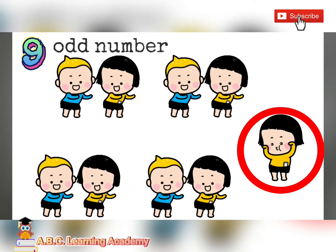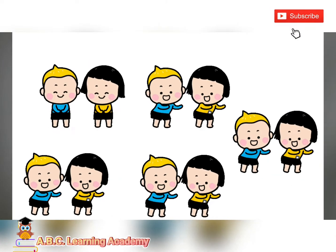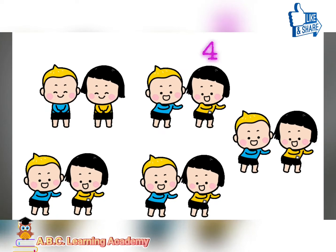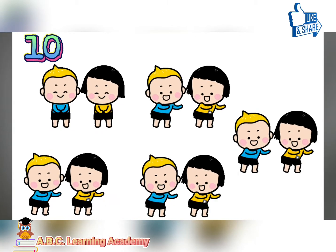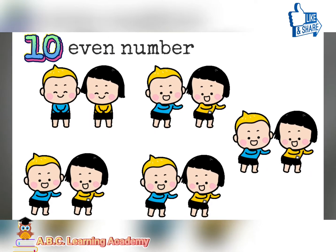Because there is one child who is left dancing alone. Let us count how many children are dancing. One, two, three, four, five, six, seven, eight, nine, ten. There are ten children dancing, and they are all in pairs. Therefore, number ten is an even number. No one is dancing alone.